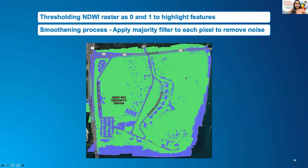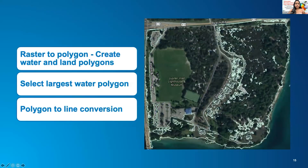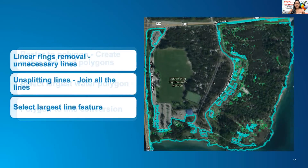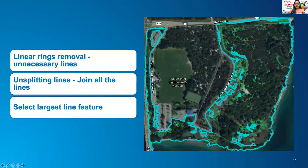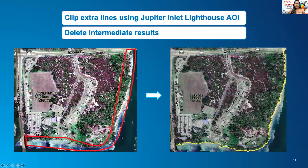The noise has been removed from the raster by applying a smoothing process, which output you can see here. The output raster is then converted to polygon and the largest water polygon is selected to generate the line feature out of it. Some unwanted lines like linear rings have been removed and then we join all the split lines in order to capture the largest line feature. Finally, the line feature in the area of interest has been chosen, which is the shoreline.